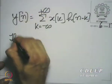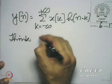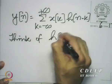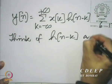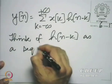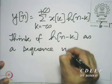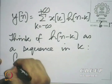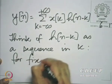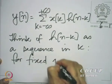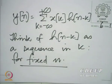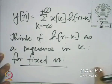h[n-k] is also a sequence, now indexed by k, not by n. The key difference is to think of h[n-k] as a sequence in k, not in n, for a fixed n — because you are trying to calculate point by point. And how do we obtain that sequence? We need to interpret that.